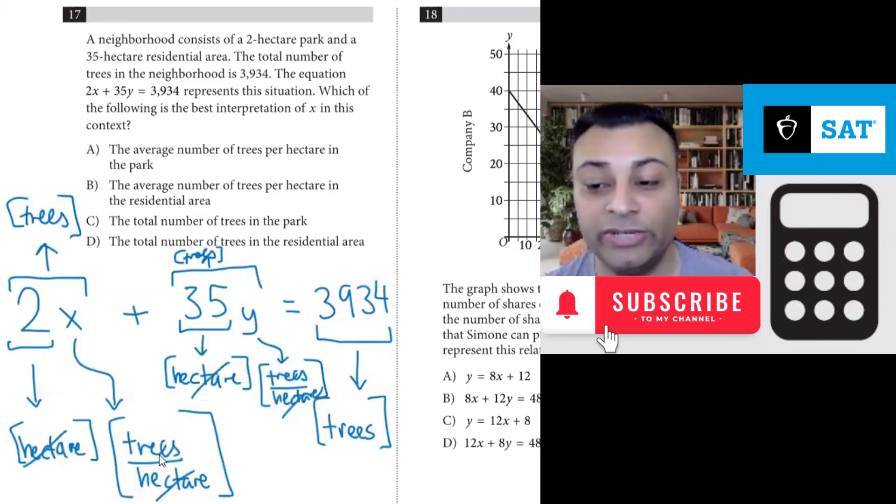Now, so the x has a unit of trees per hectare. The average number of trees per hectare. Perfect, so we're down to these two. The total number of trees, that's not right, and that's not right.